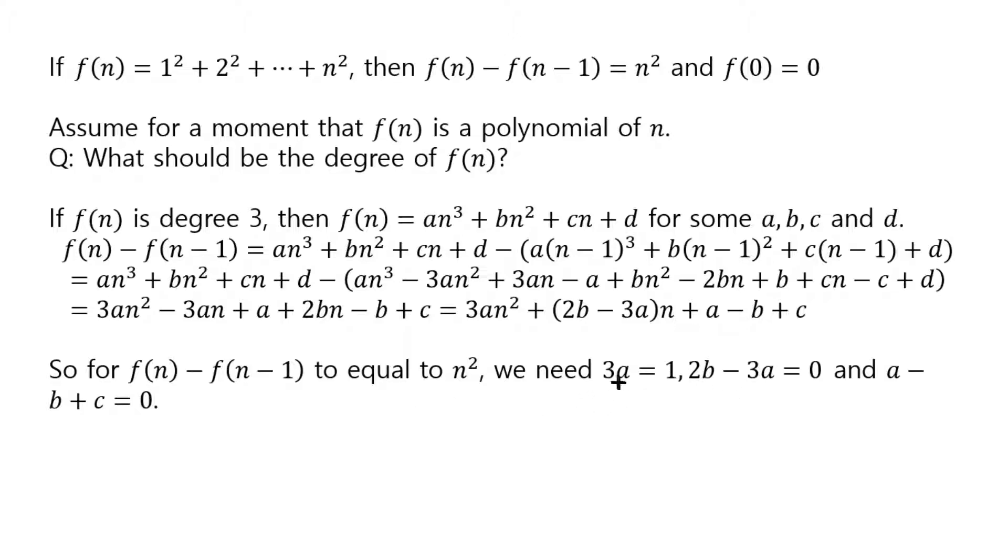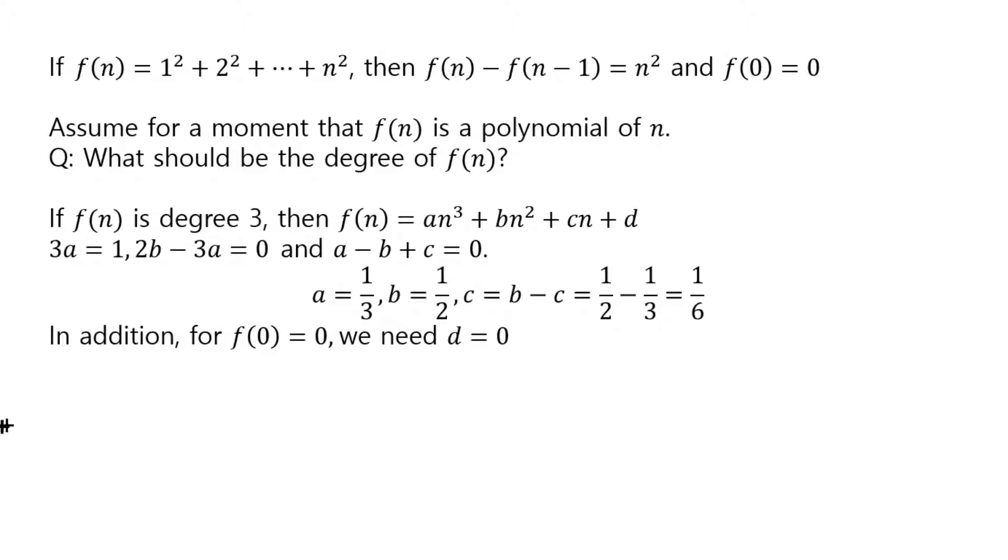And so now what remains is to find the values of a, b, and c. So let's try that. We just need to calculate this. Well, divide by 3, you get a equals to 1/3. Plug it in here. 3 times 1/3 is 1. So 2b is equal to 1. Divide by 2, you get b equals to 1/2. And then c, if you solve for c, then c is b minus a, and then 1/2 minus 1/3 will give you 1/6.